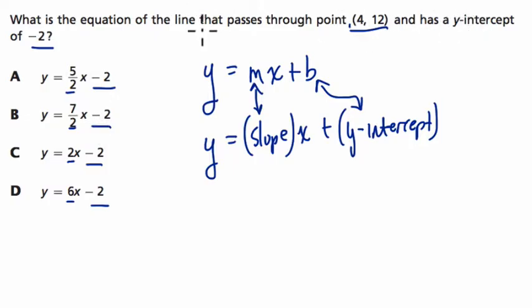So the y-intercept is -2, and they're telling you it passes through the point (4, 12). So the only thing left to find is the slope.